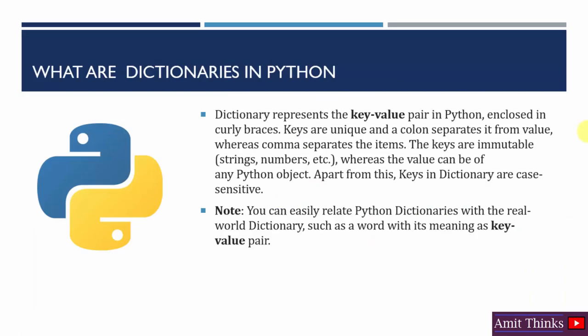A dictionary represents key-value pairs in Python, enclosed in curly braces. You can relate it to the real world example of a dictionary, where you find words to get their meaning — words and meaning pairs are like key-value pairs. Keys are unique and a colon separates the key from its value, written as key colon value.